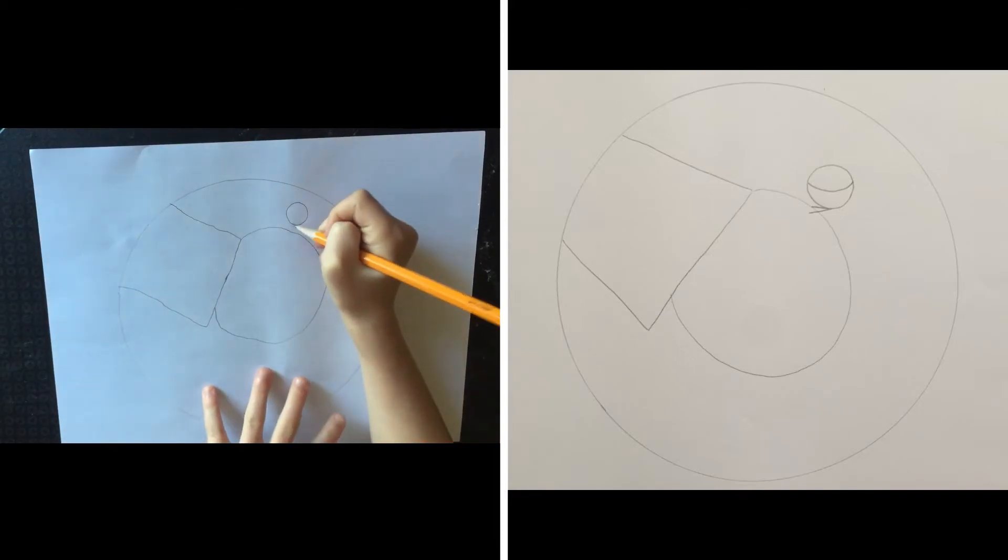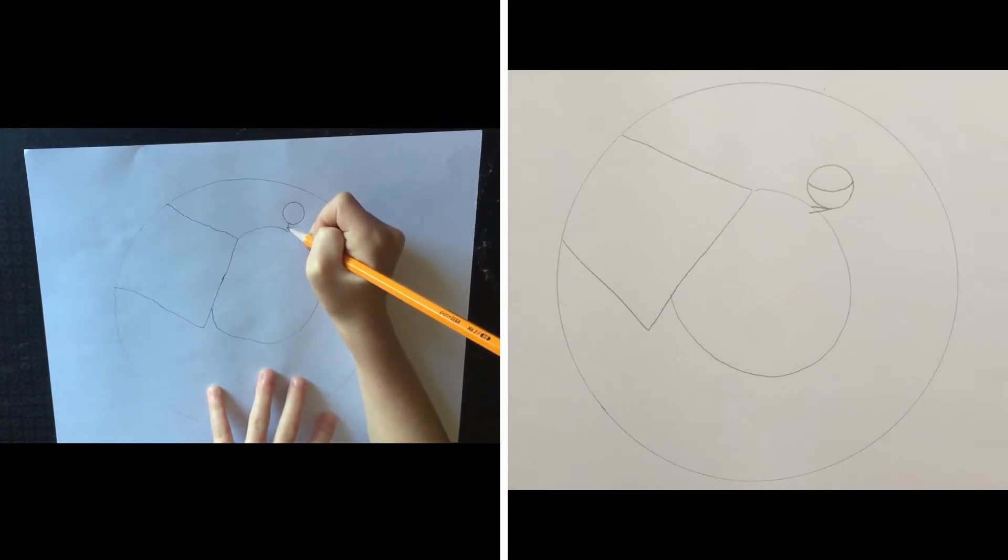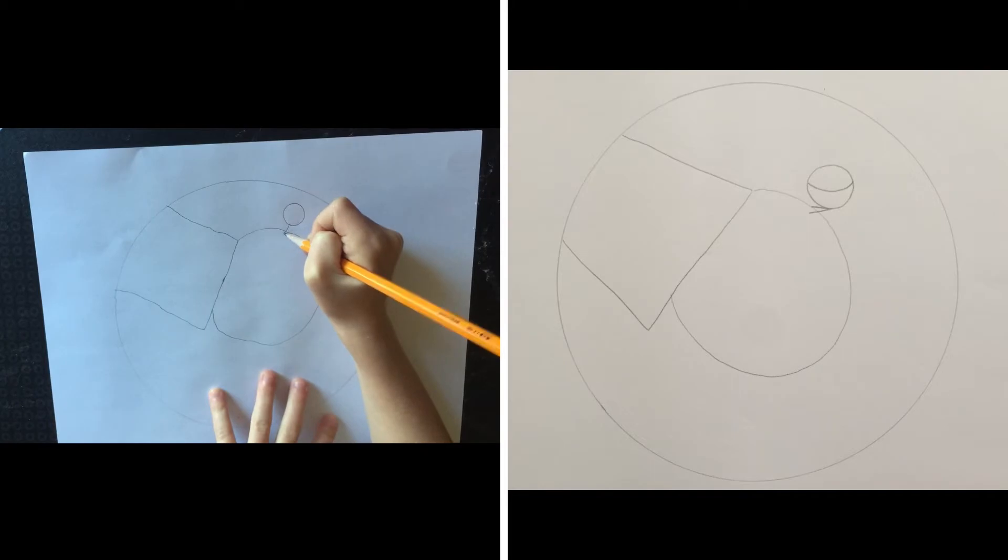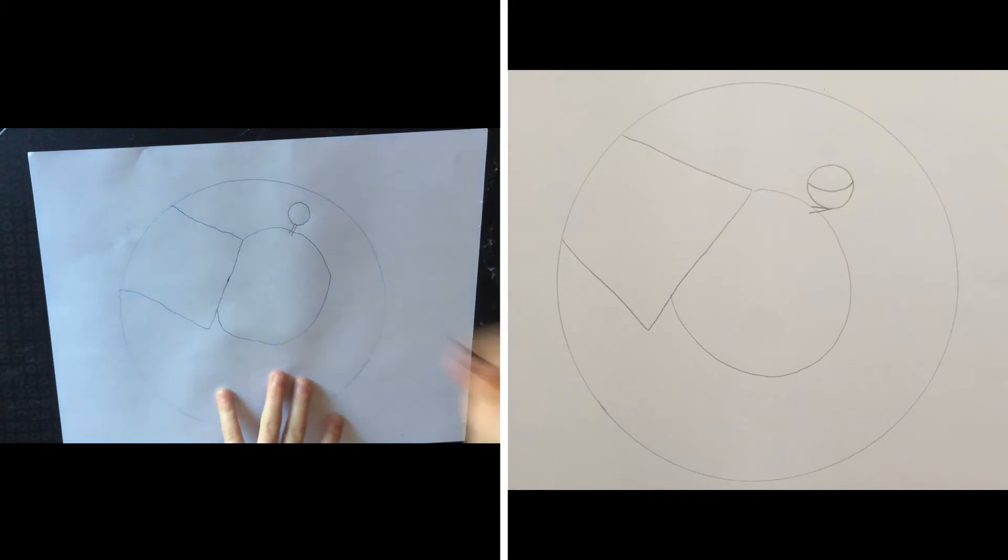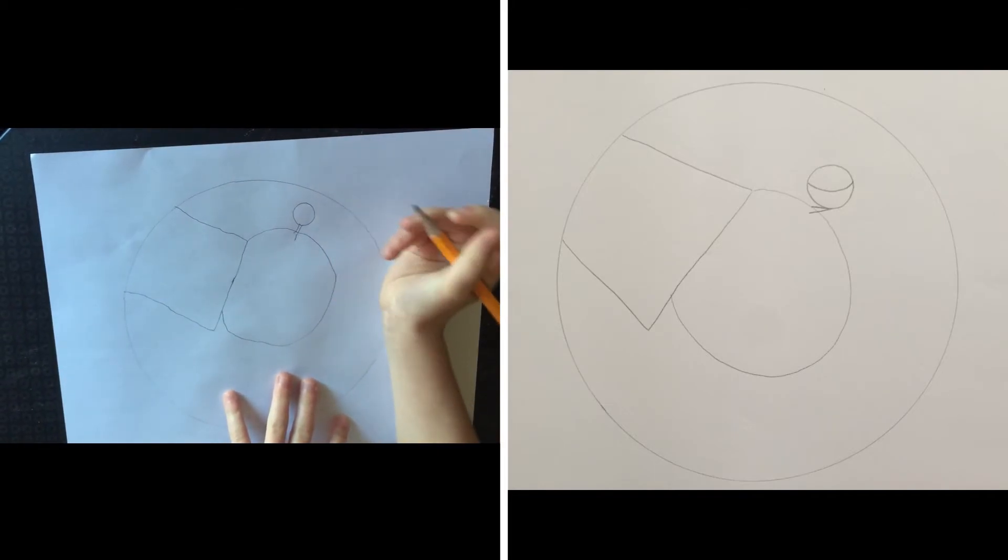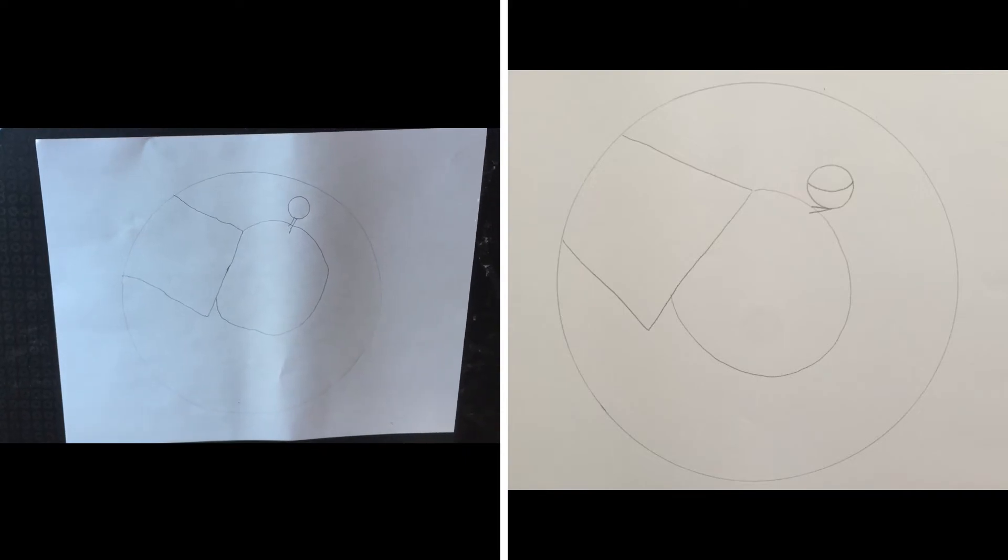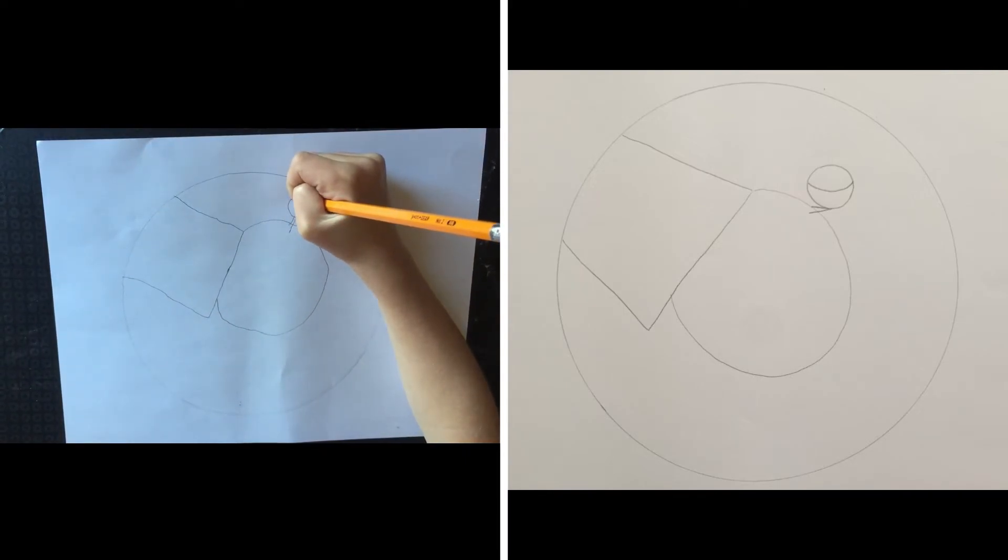And we're going to give him some eyelashes on the bottom, kind of like a letter V, with a long and a short one. And a little swoop in the eye to make it look like he's looking at us.